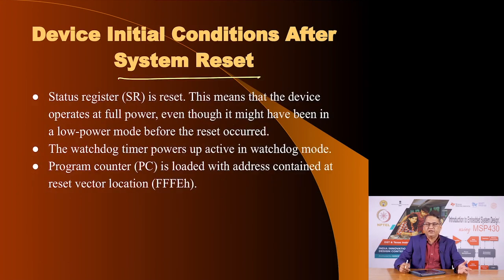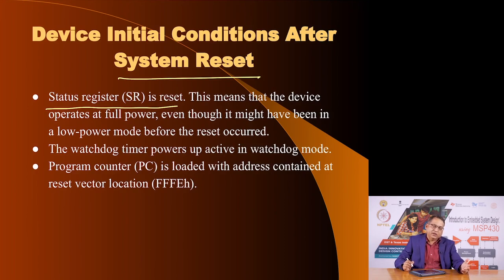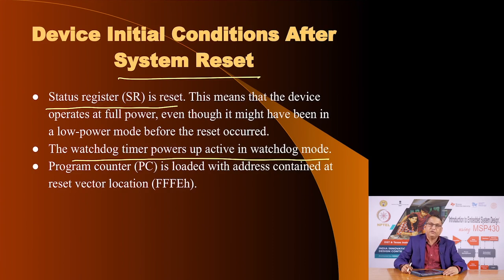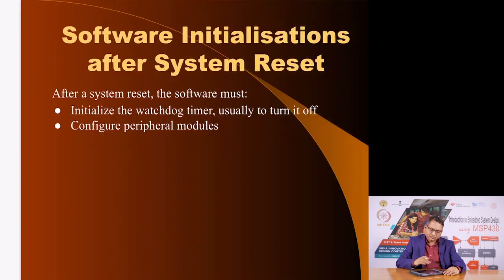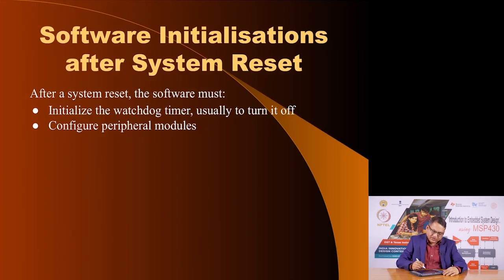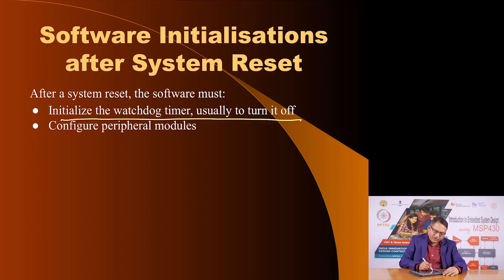After system reset — whether POR or PUC — the status register is set to 0, meaning if you were in a low power mode you will come out of it. The watchdog timer becomes active in watchdog mode, and the program counter is loaded with the reset vector location at addresses 0xFFFE and 0xFFFF. After system reset, you must initialize the watchdog timer (usually you turn it off) and configure the peripheral modes — that is the responsibility of the program.